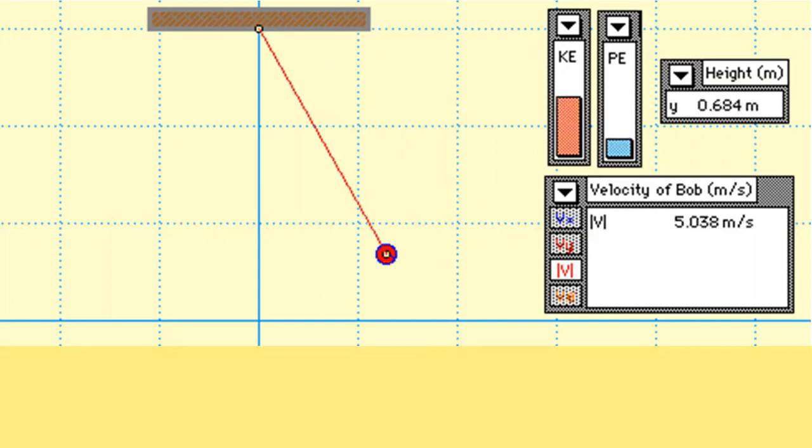As we observed in the illustration, as the body goes down, the kinetic energy increases and potential energy decreases. While as the body goes up, the kinetic energy decreases.